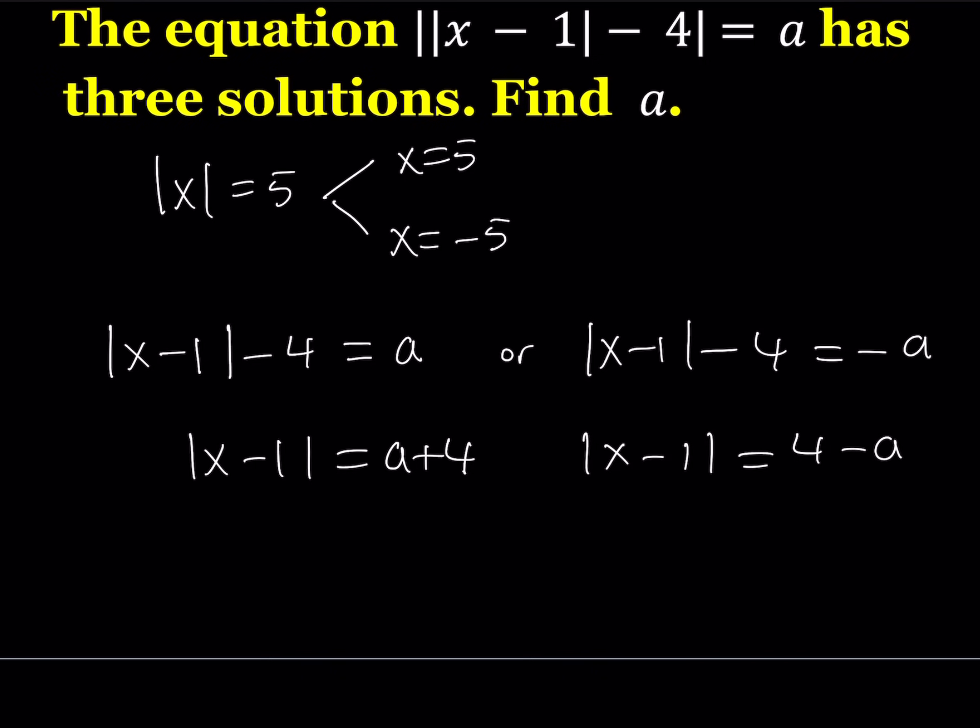So as you know, if the absolute value of something equals something else, then we split it up into two solutions and we have two branches now. So it's supposed to bring us four solutions, two from each branch. But we do want three solutions. So how is that possible? Well, the exception here is, if the absolute value of x is equal to 0, then that only gives us one solution, x equals 0. So that's what we're going to use.